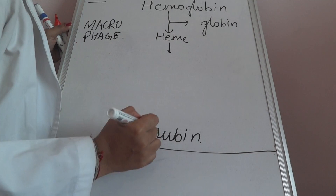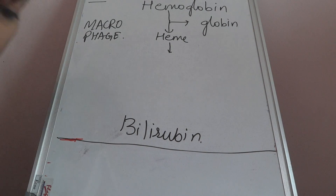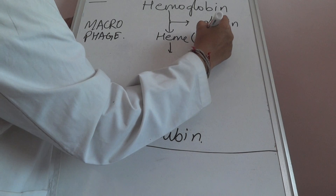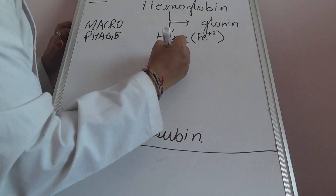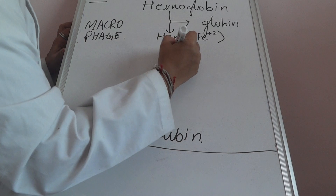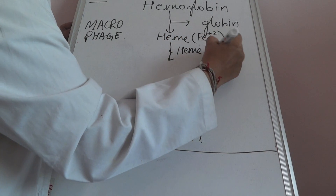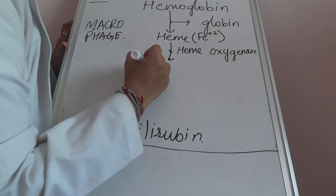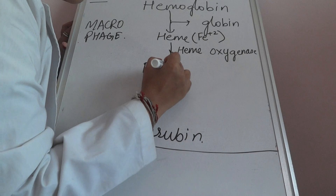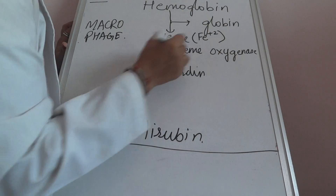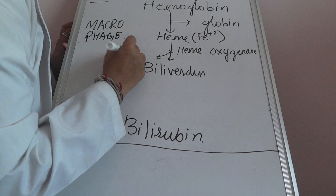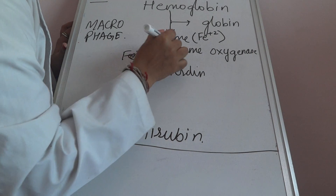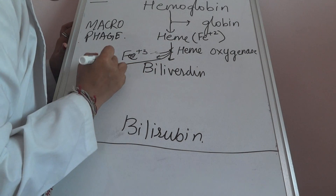Now we will see the steps of how heme is broken down. Heme contains ferrous iron in its molecule. But when it is acted upon by heme oxygenase to form biliverdin, the iron is released in the ferric form. A second messenger is also released, that is carbon monoxide.